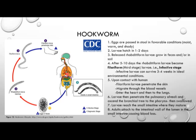Infection begins with eggs being passed in the stool in favorable conditions, which are moist, warm, and shady regions. Larvae hatch from the egg in 1 to 2 days, releasing the rhabditiform larvae that grow in the feces or soil. After 5 to 10 days, the rhabditiform larvae develop into filariform, or third stage larvae, where they are infective. Those infective larvae can survive for 3 to 4 weeks in ideal environmental conditions.